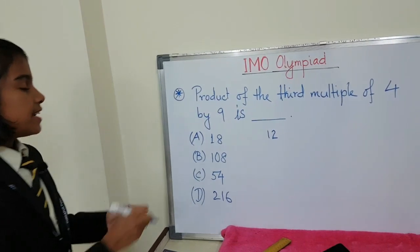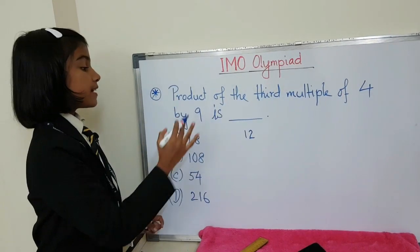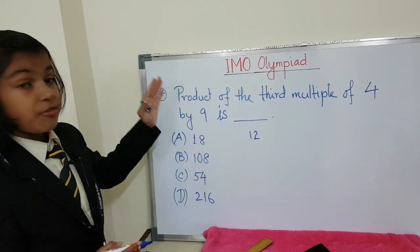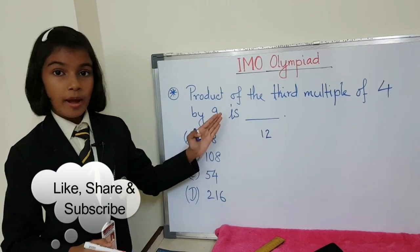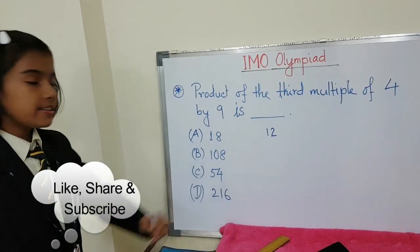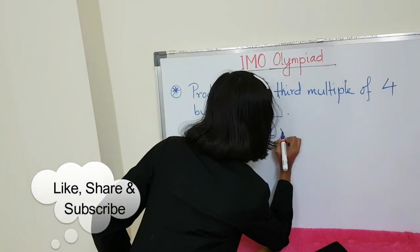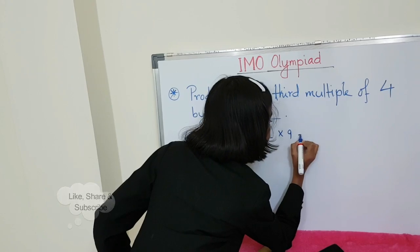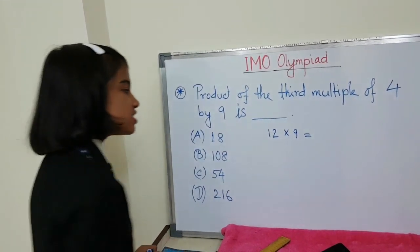Third multiple of 4 by 9 means we have to multiply the third multiple of 4 by 9, which is 12. 12 by 9, then 12 times 9 is 108.